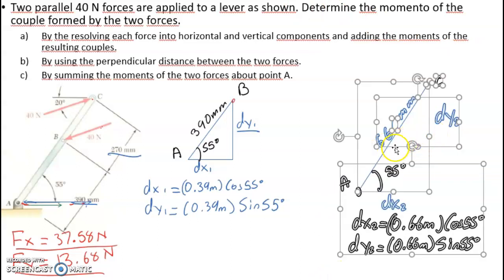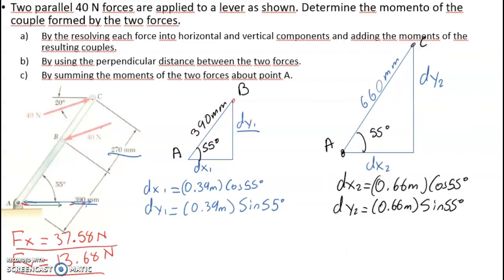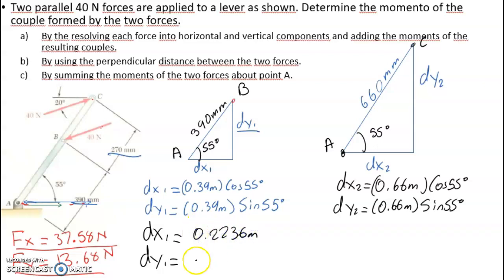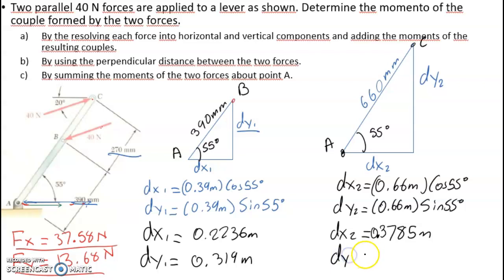With those formulas, the numerical values are: dx1 = 0.2236 meters, dy1 = 0.319 meters, dx2 = 0.3785 meters, and dy2 = 0.5406 meters. Now we have all the means to calculate all the moments.